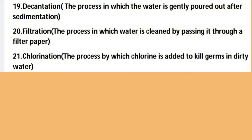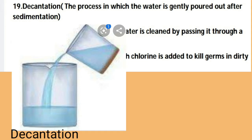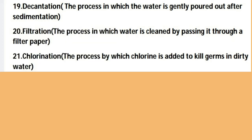The next hard word is 'decantation'. Decantation means the process in which water is gently poured out after sedimentation. After sedimentation, the insoluble particles settle at the bottom, and when you carefully pour the water into another container without disturbing the settled particles, that process is called decantation. Both sedimentation and decantation occur together — first sedimentation, then decantation.